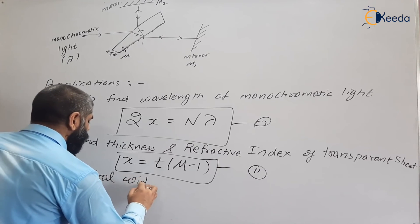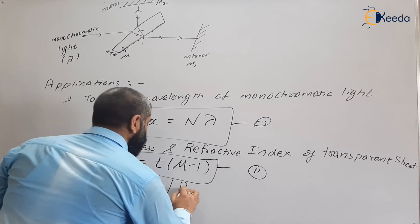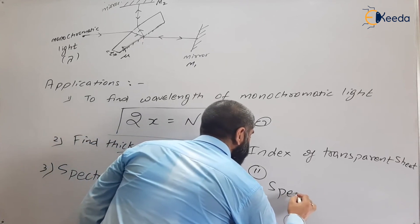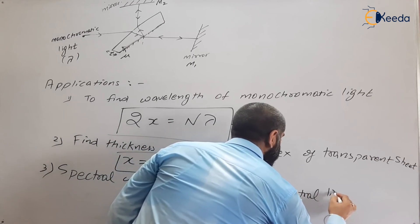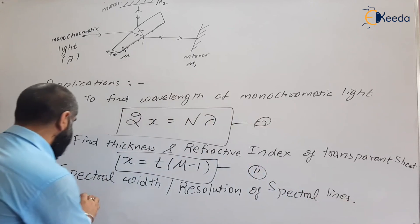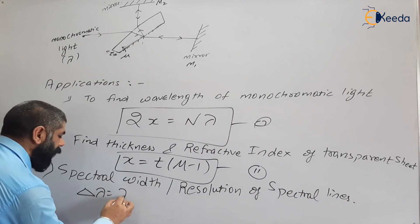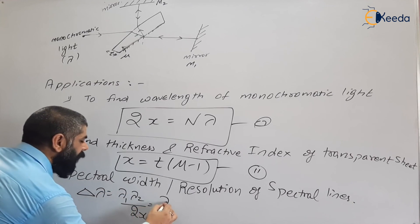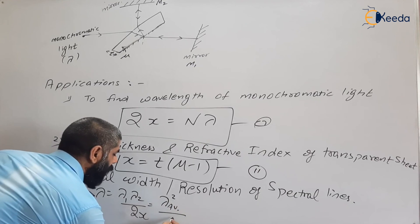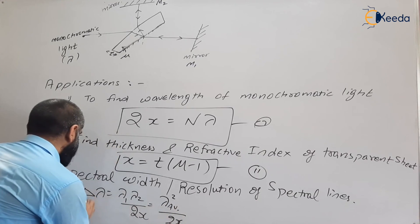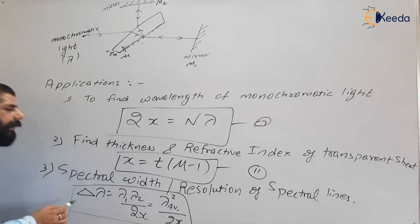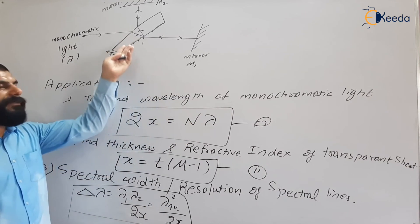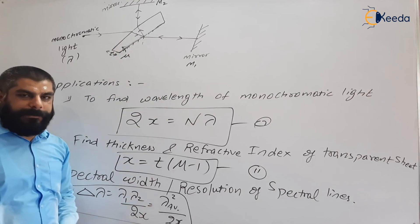The third application is to find the spectral width, also known as the resolution of spectral lines. The formula is: Δλ = λ²/(2x), where λ is the average wavelength and 2x is the optical path difference. We will next look at numerical problems based on these three applications — finding wavelength, refractive index/thickness, and spectral width.